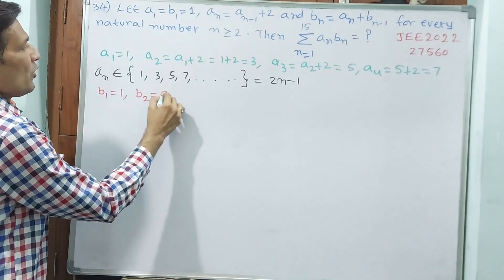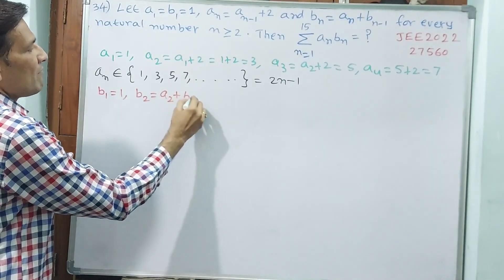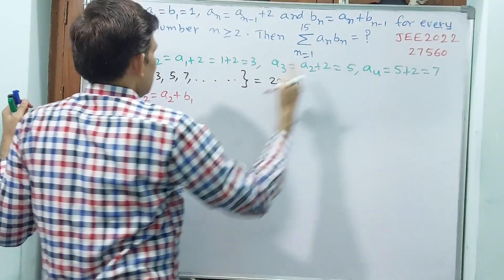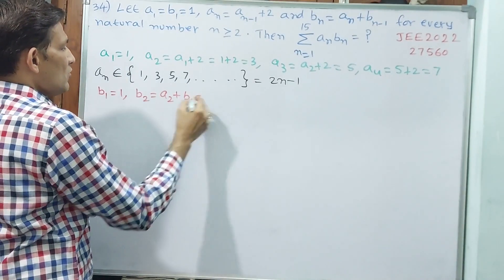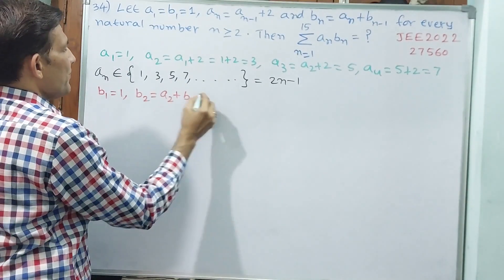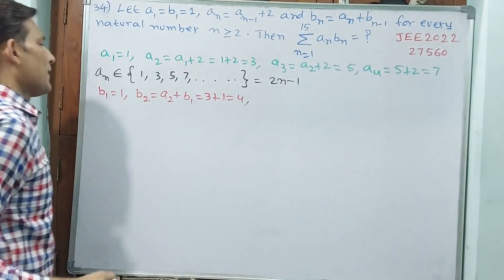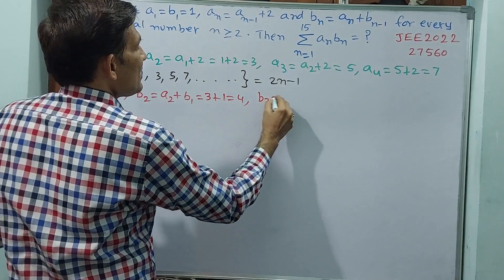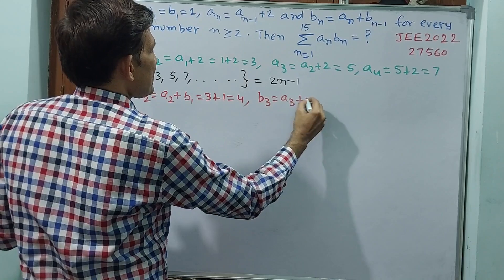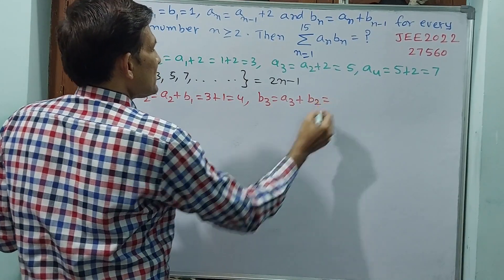But b_n, b_n means initially b2. b2 is equal to a2 plus b1. Why? Because see, b_2 minus 1, a2 plus 1. That is equal to, see, a2 is how much? 3, 3 plus 1, that is equal to 4. b3 is equal to a3 plus b2.